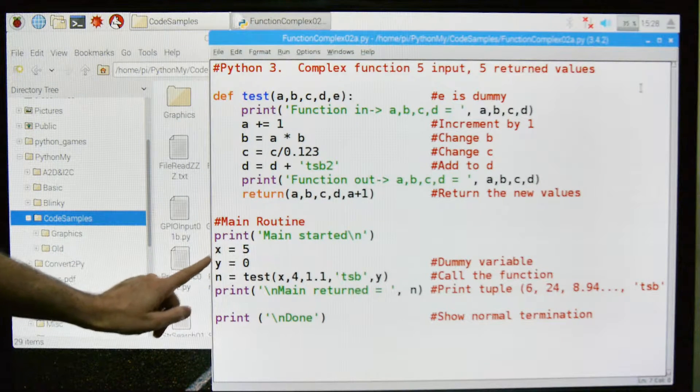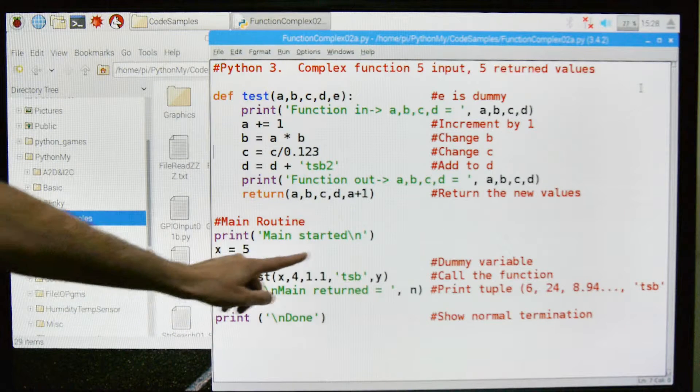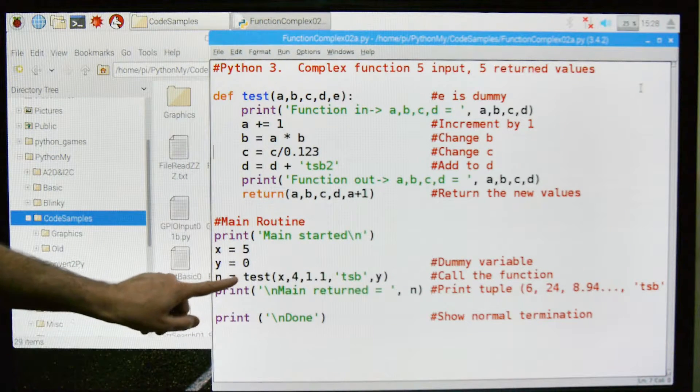So we're going to set x equal to 5, y is equal to 0, but I'm going to use this as a dummy variable. I'll show you that right now.